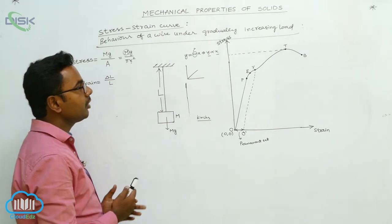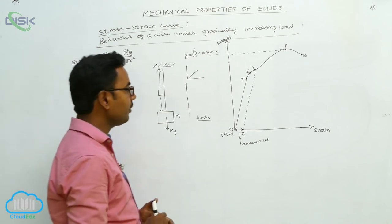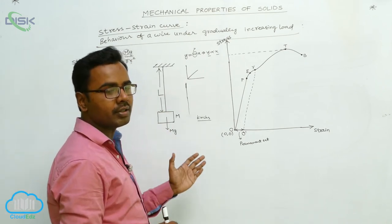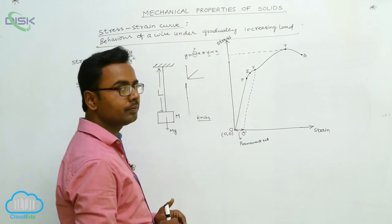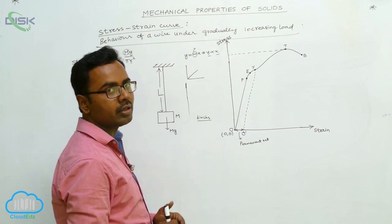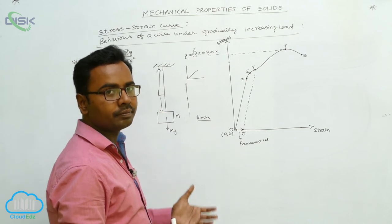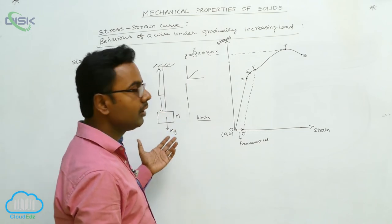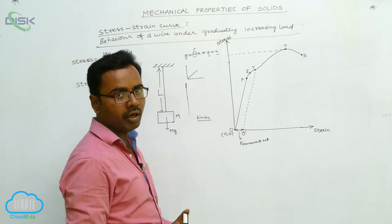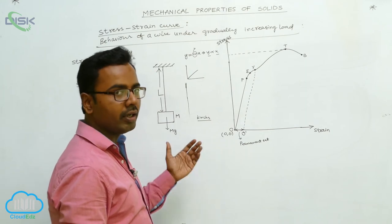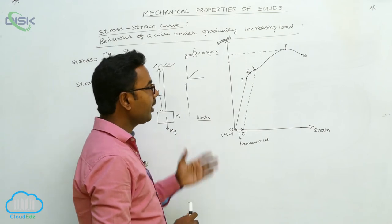To summarize the behavior of the wire under gradually increasing load: from O to P the graph is a straight line, meaning stress is directly proportional to strain and Hooke's law is obeyed. From P to E the graph is slightly curved so Hooke's law is not obeyed, but up to point E if you remove the load the wire regains its original length, which is why E is called the elastic limit. Between E and Y the wire cannot regain its length — it loses its elasticity property.